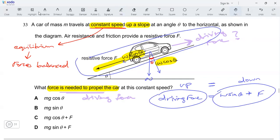And that's it. That's our answer: w sine theta plus F, option D. Instead of w, the answers are written as mg, so it's the same thing. I can say mg sine theta plus F. And that's my answer.